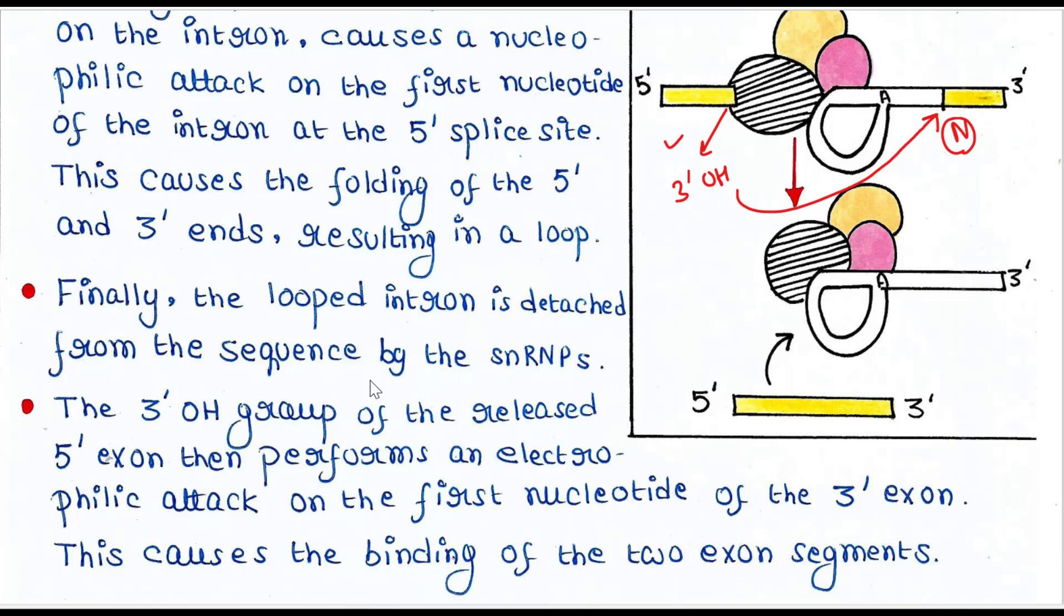The opposite happens now, and this causes the binding of the two exon segments. That's why the intron is removed and two exons are joined together. What is this electrophilic attack? An electrophilic attack is a reaction where an electron-deficient molecule called an electrophile attacks a molecule with a high electron density.